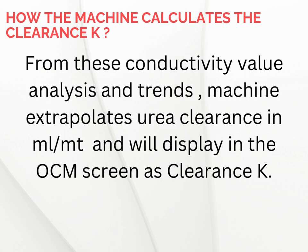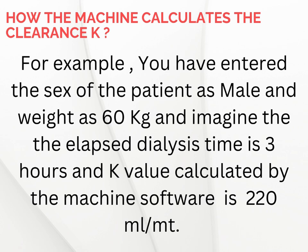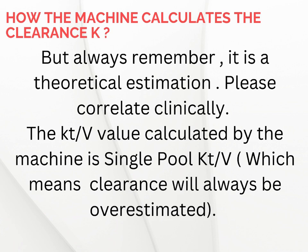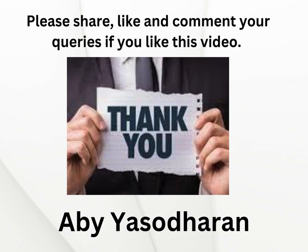Let's do a real-world KT over V calculation. If a male patient weighs 60 kg, the K value calculated by the machine is 220 ml/min, and the dialysis time is 180 minutes (three hours), the OCM display will show KT over V as 1.1. Not bad, but remember this is just an estimate. The KT over V shown by the machine is always single pool KT over V, so it will always overestimate the clearance. My advice: always correlate clinically and compare the results.